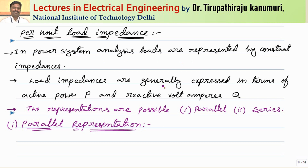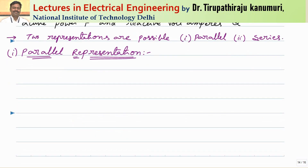These load impedances are generally expressed in terms of the active power P and the reactive volt ampere Q. Based on how you represent them, there are two possible ways: either in the parallel form or in the series form. Let us see one by one how this load can be represented to express the active and reactive power taken by your load in per unit.